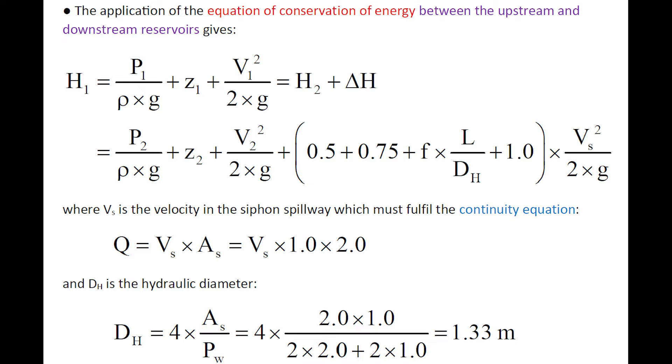The application of the equation of conservation of energy between the upstream and downstream reservoir gives this relationship, in which Vs is the velocity in the siphon spillway which must fulfill the continuity equation, and Dh is the equivalent pipe diameter or hydraulic diameter.